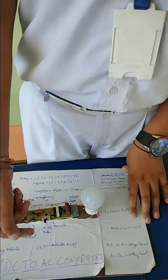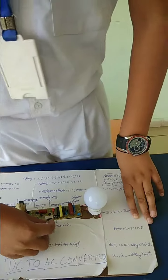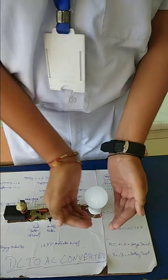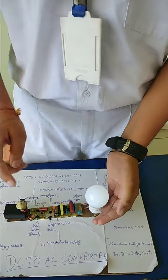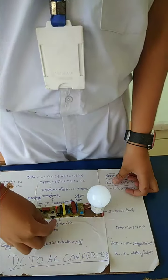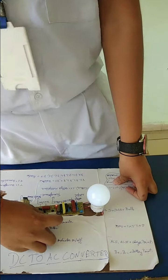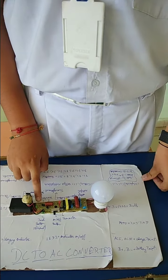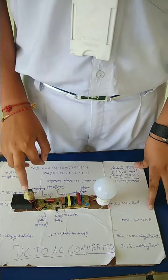This is the model. When I turn it on, it will glow the bulb. And here is the charging point — two diodes and one resistor are also connected here.